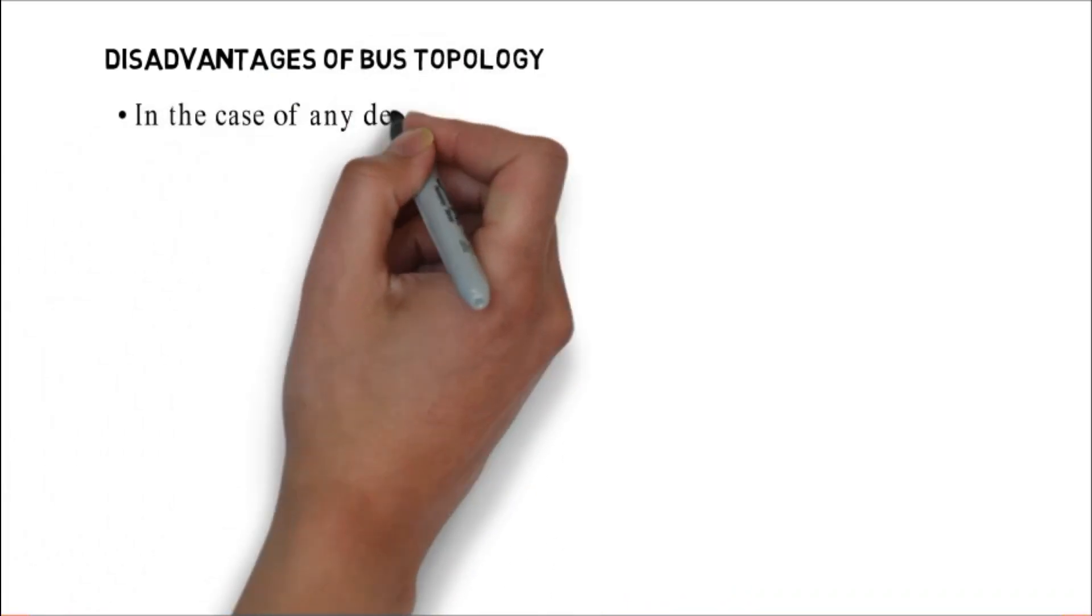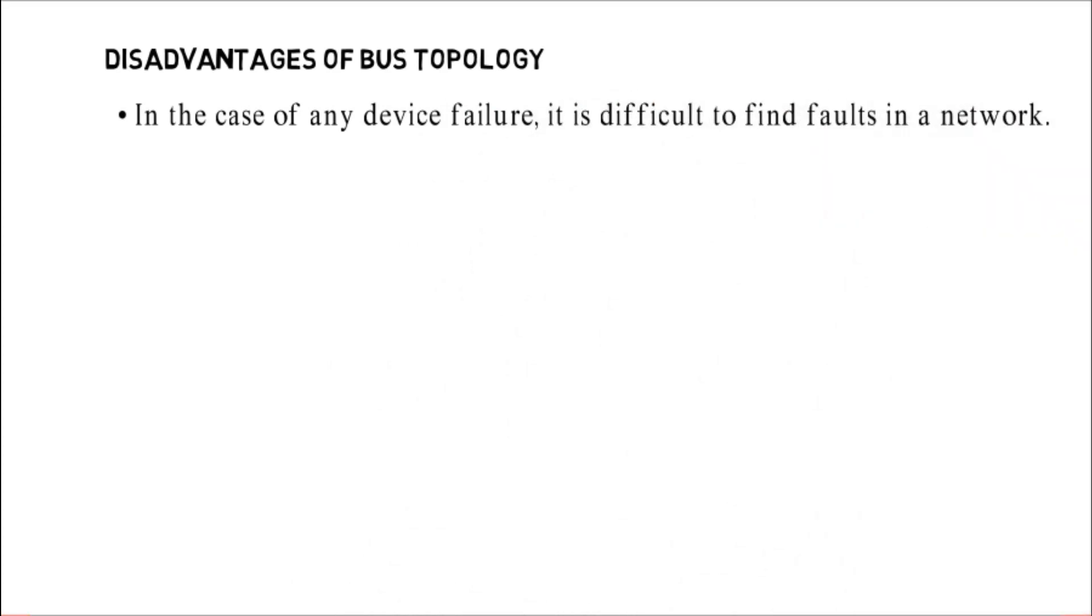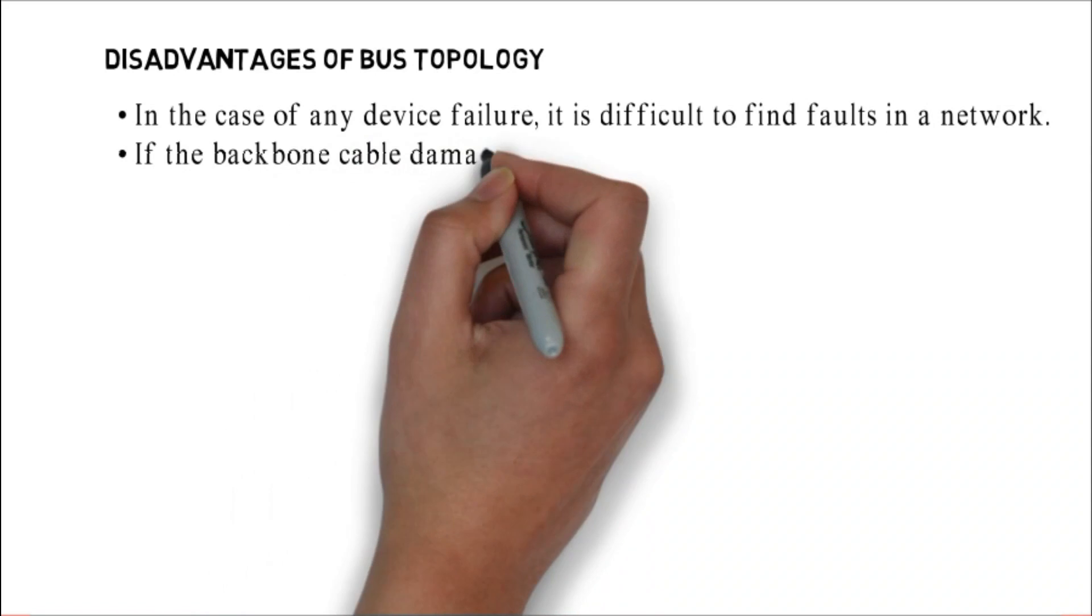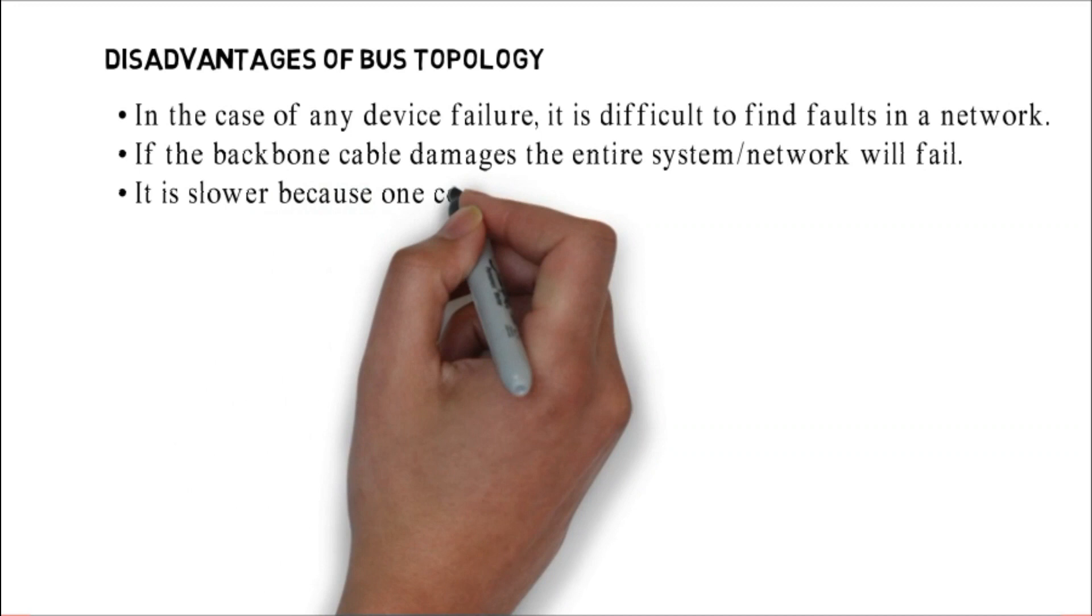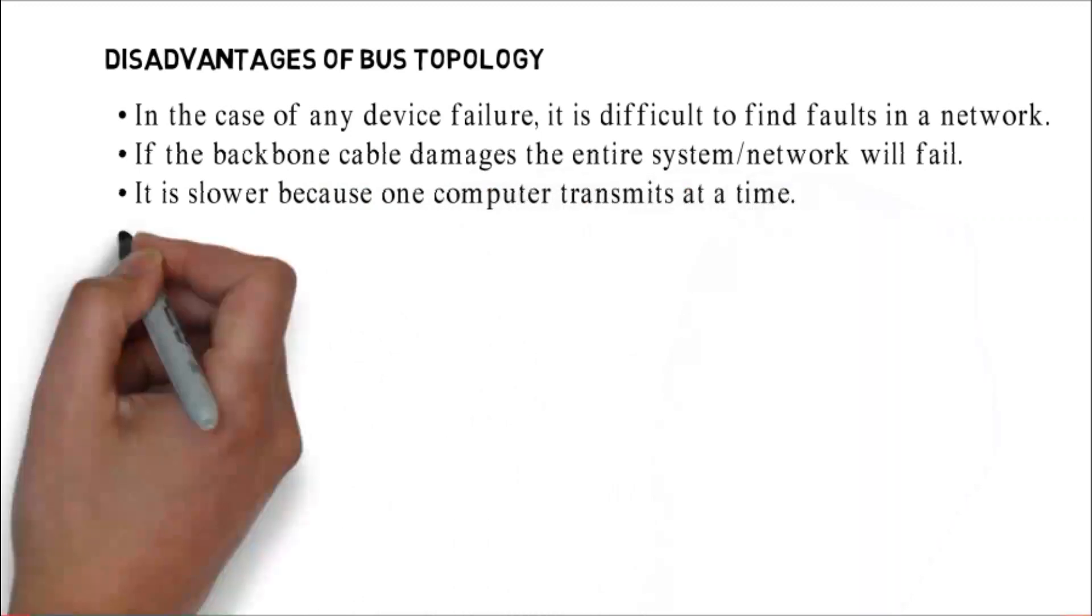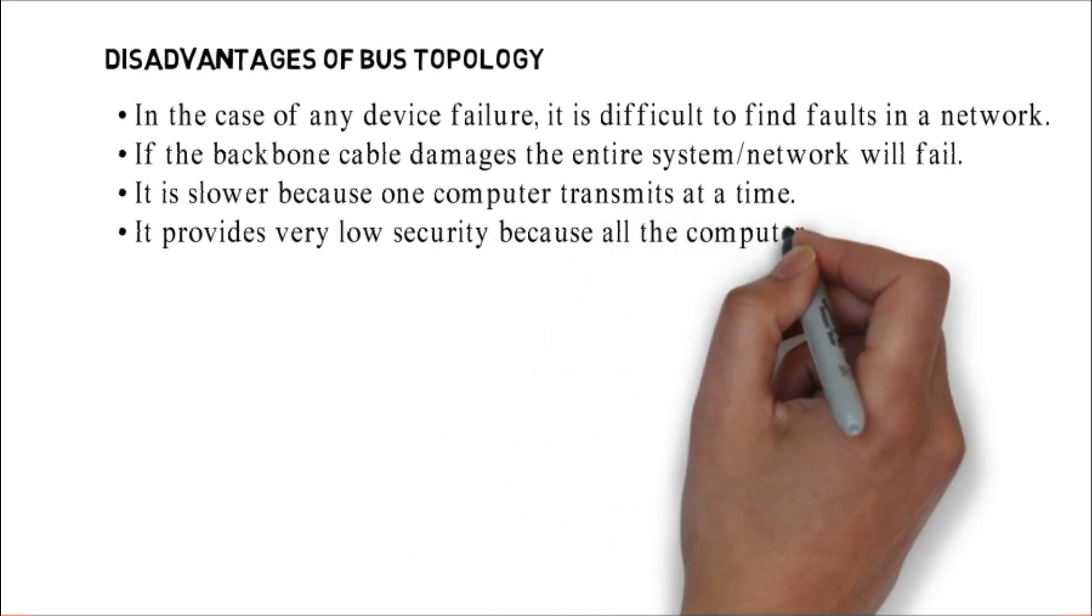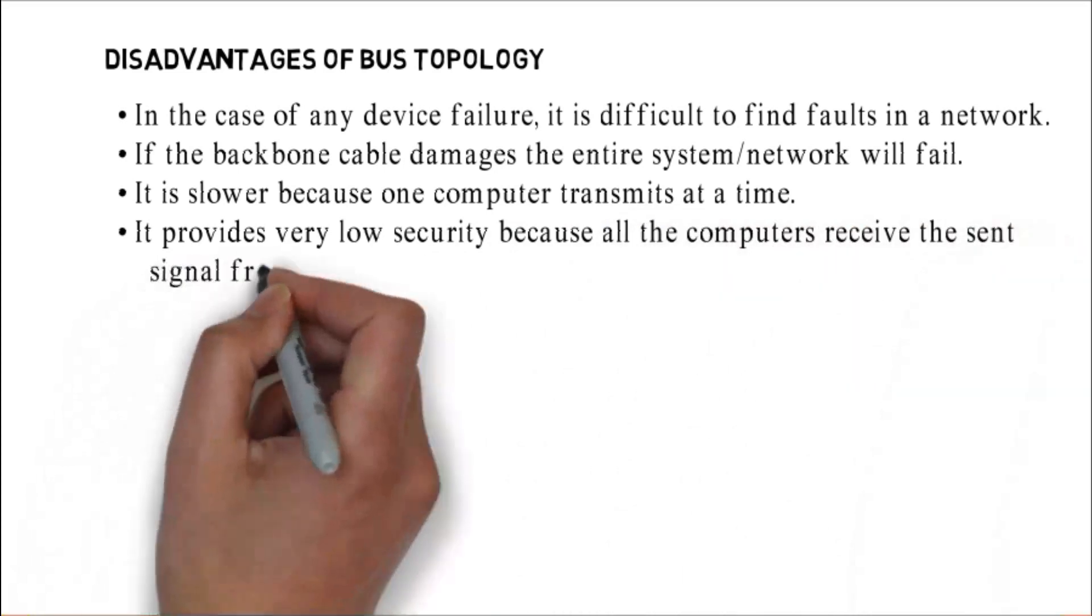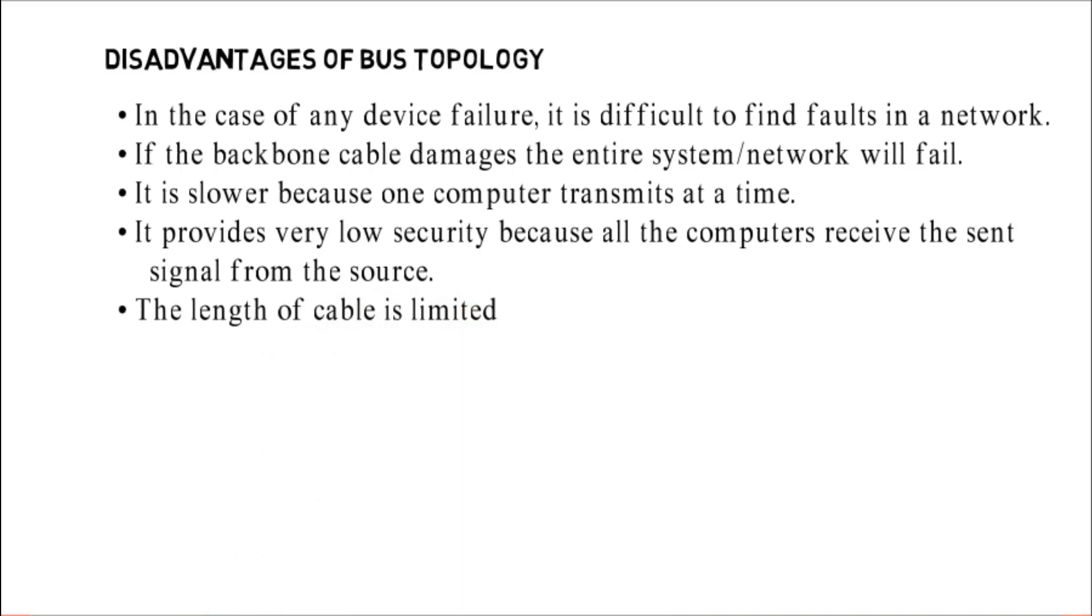Disadvantages of bus topology: in the case of any device failure, it is difficult to find faults in a network. If the backbone cable damages, the entire system or network will fail. It is slower because one computer transmits at a time. It provides very low security because all the computers receive the sense signal from the source. The length of cable is limited.